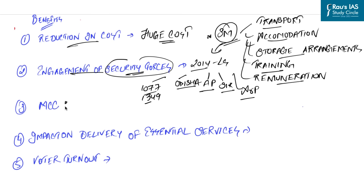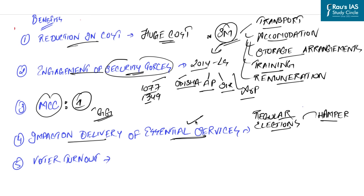Another benefit is policy paralysis that results from the imposition of the model code of conduct during election time. If all elections are held in one particular year, it will give a clear four years to the political parties to focus on good governance. Next is impact on delivery of essential services. Regular elections hamper the delivery of essential services due to the engagement of public servants, including a large number of teachers in the election process. Another benefit is voter turnout. According to law commission, simultaneous polls will boost voter turnout.